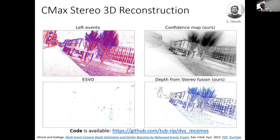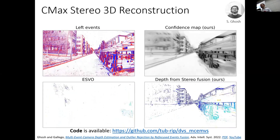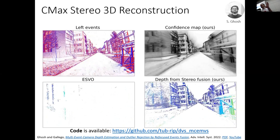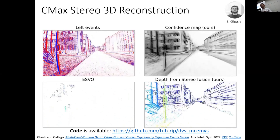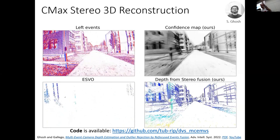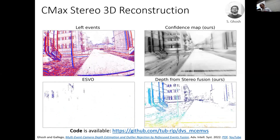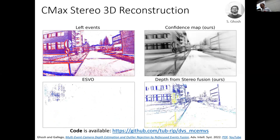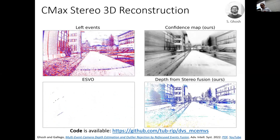It also works outdoors. The core question was how to fuse data from two stereo event cameras. We don't do any data association or correspondence between events. Instead, we build disparity space images and fuse them with a harmonic mean, which yields quite a nice theoretical formulation.